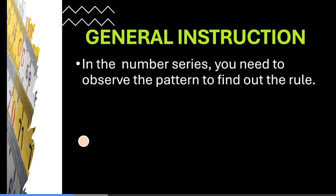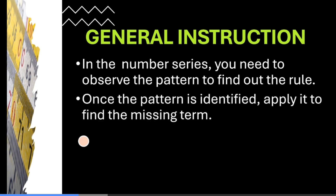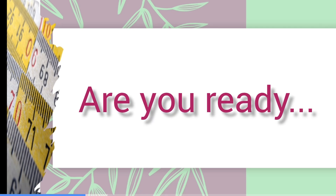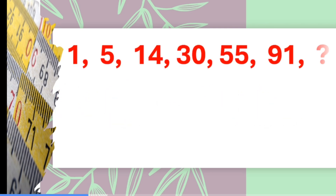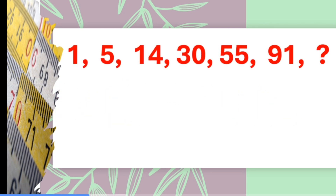The general instruction for number series: you need to observe the pattern to find out the rule. Once you get the rule or pattern, it is easy to find the missing term. Are you ready? Now let's start. Just pause the video and find the number, then see the answer: 1, 5, 14, 30, 55, 91.